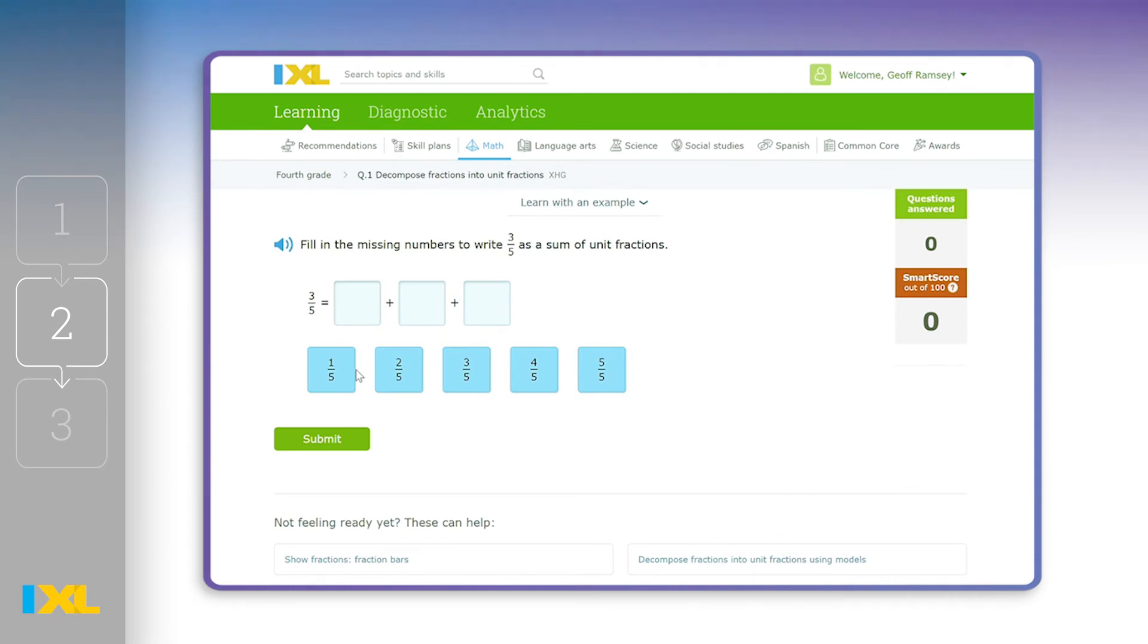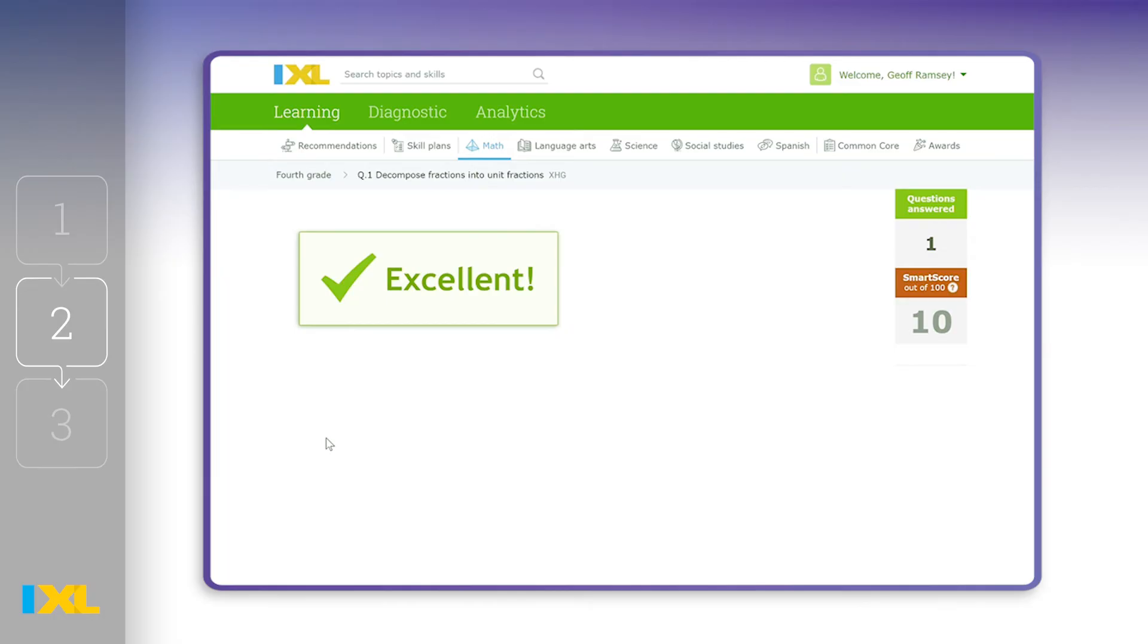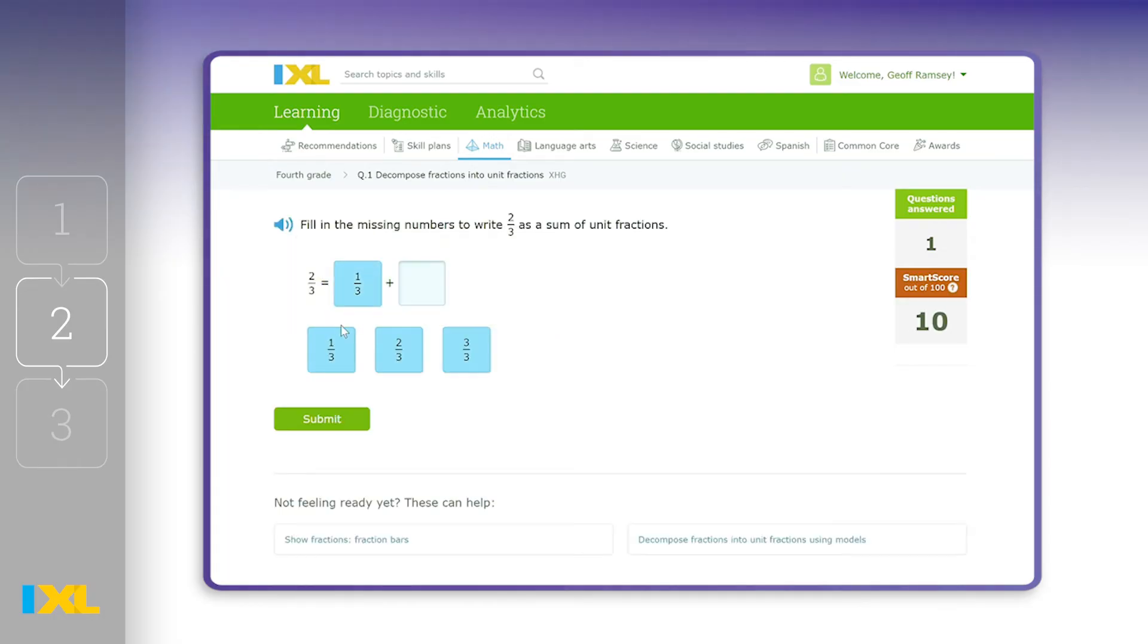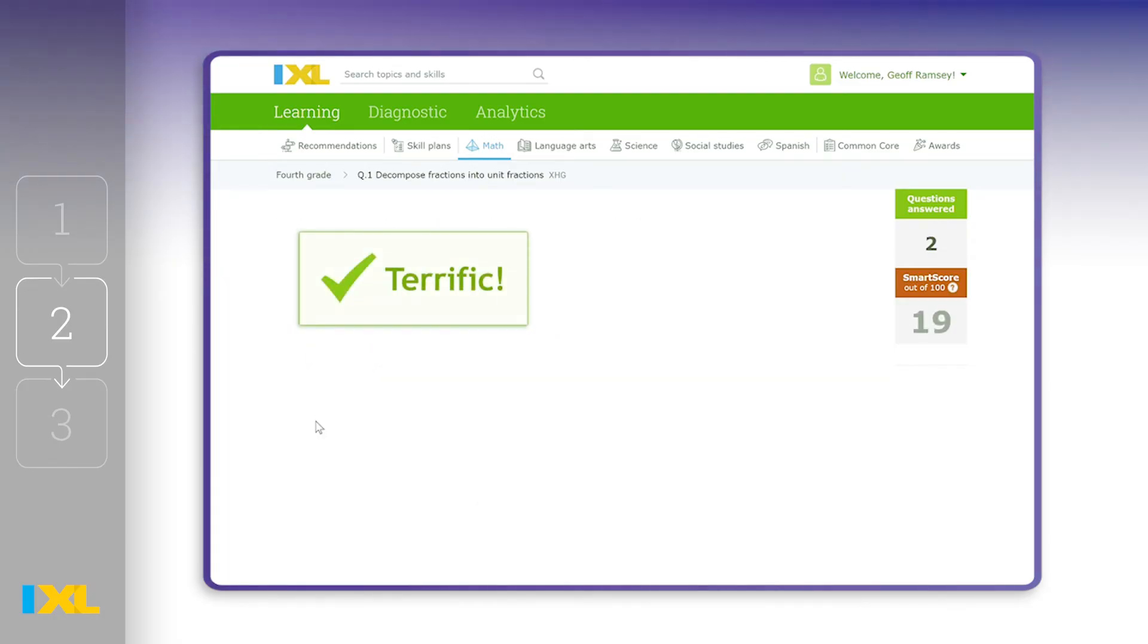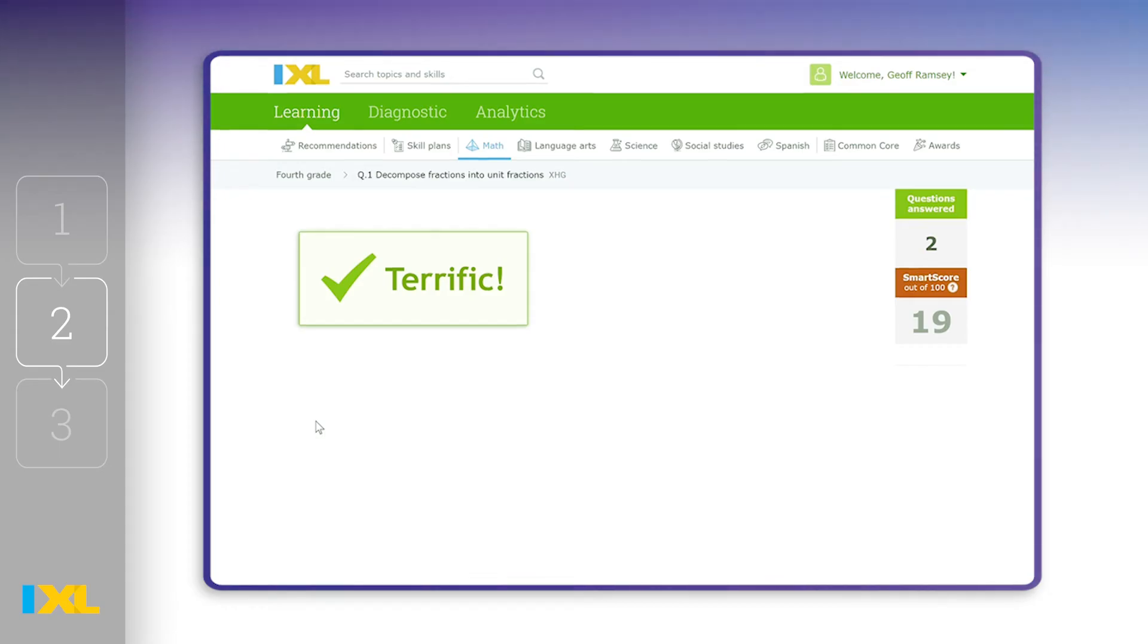After introducing the lesson to your whole class, release students to work on their first iXL skill, Q1. As they work, iXL will automatically adapt to their abilities so you can be sure that each learner is being challenged at the right level.